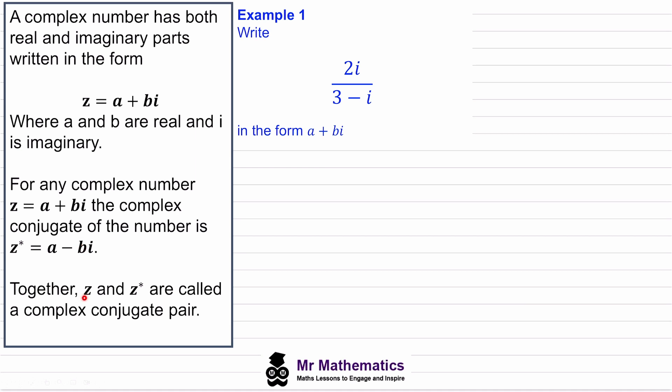Together, z and z star its complex conjugate are called a complex conjugate pair. Complex conjugates can be used to simplify expressions involving complex numbers, especially when dividing one complex number by another, and in this video I'm going to show you how to do this.